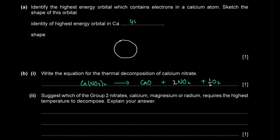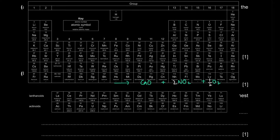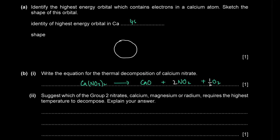Part C asks which Group 2 nitrate — calcium, magnesium, or radium — requires the highest temperature to decompose. The thermal stability of Group 2 nitrates increases down the group, meaning a higher temperature is required for decomposition. Radium is furthest down the group and is the most thermally stable, so radium nitrate requires the highest temperature for thermal decomposition.